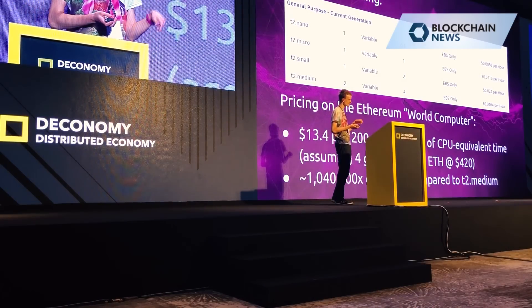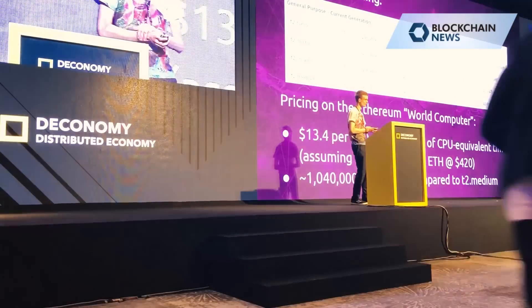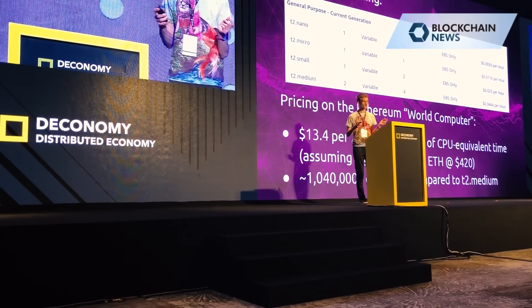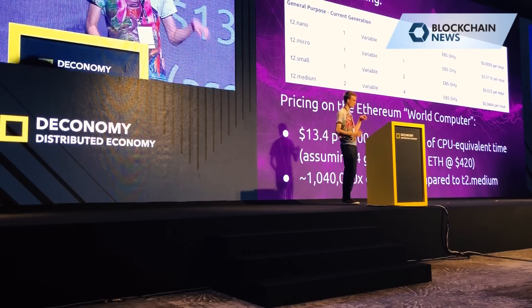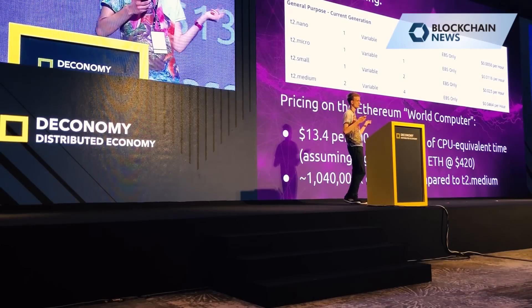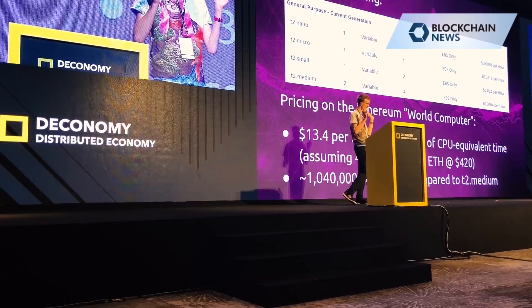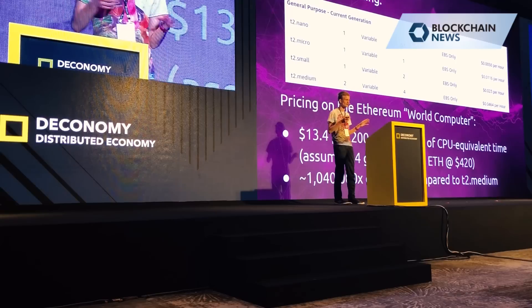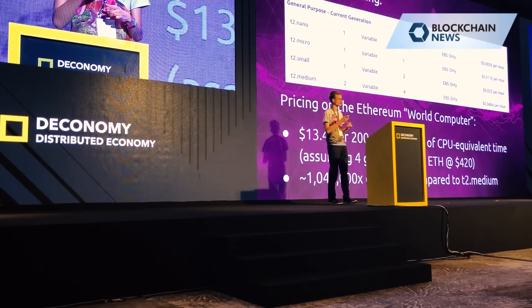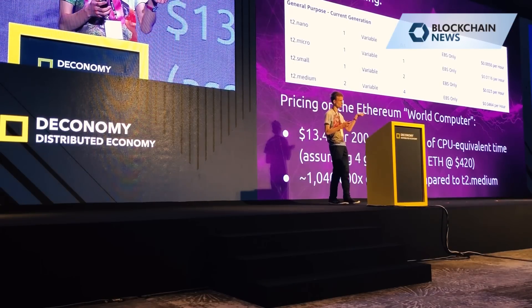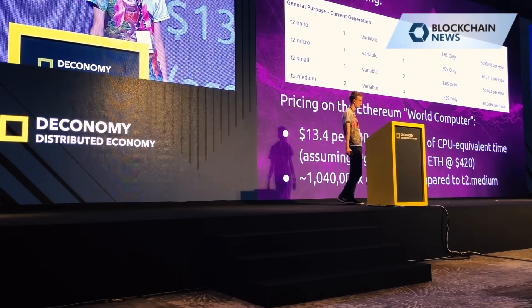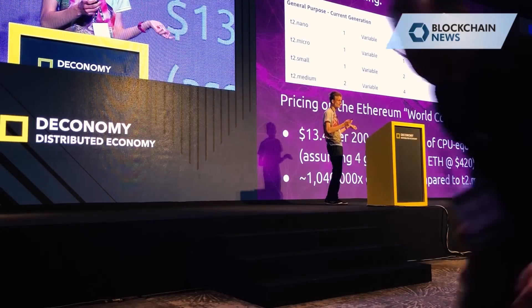If you look at Amazon EC2 pricing — a medium size general purpose computing — the cost is about $0.04 per hour. Now let's look at the pricing of the Ethereum world computer. Every Ethereum block, which comes every 14 seconds, takes about 200 milliseconds for a laptop to process. A block has 8 million gas, and at an average gas price of 4 gwei with ether at $420, the cost of filling an Ethereum block is $13.40 — $13.40 for 200 milliseconds on the Ethereum world computer, versus four cents for an hour of Amazon EC2. That is a 1.04 million factor difference in efficiency.